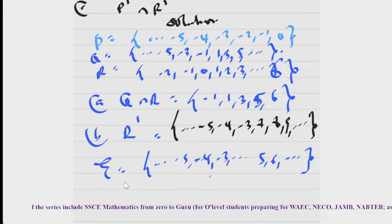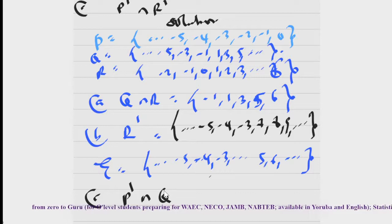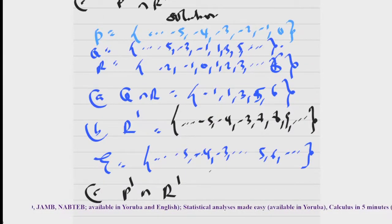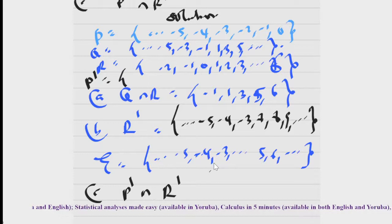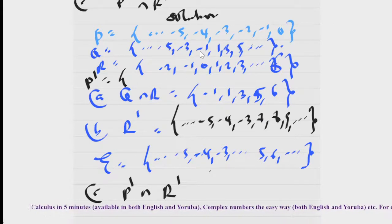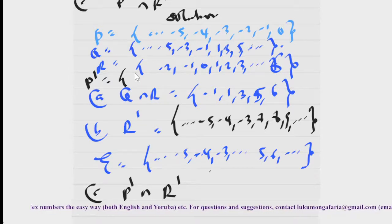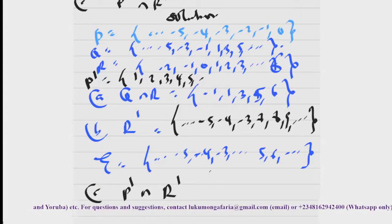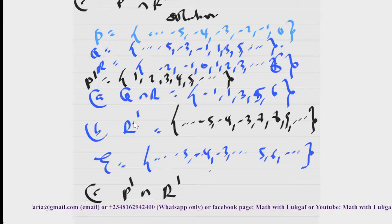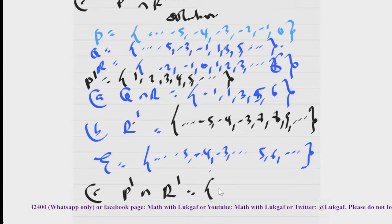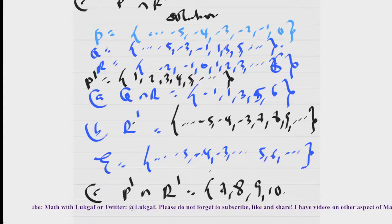And the last one, C, you have to find P complement intersection R complement. We know R complement. Now find P complement — that is what is in the universal set that is not in P. P goes up to zero, so P complement starts from one, two, three, four, five — that is the set of natural numbers. What will be the intersection between P complement and R complement? The common elements are seven, eight, nine, ten, and so on.